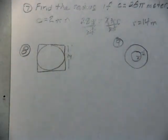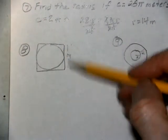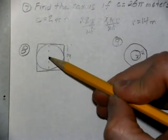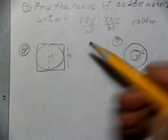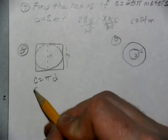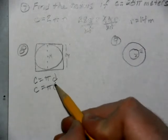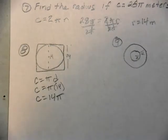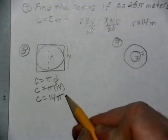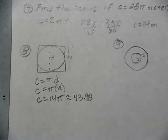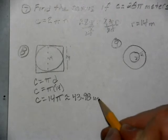We're going to find the circumference of our circle. The circle is inside of the square, and the square's side is 14, which makes the diameter 14 also. So the circumference is πd, giving us 14π, which is approximately 43.98. Since there are no units given, you can just call it units.